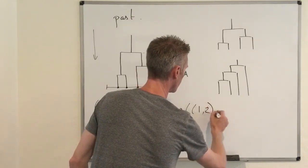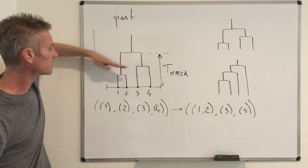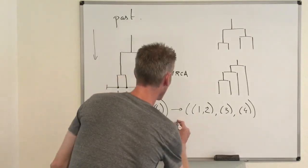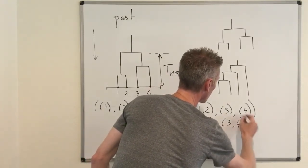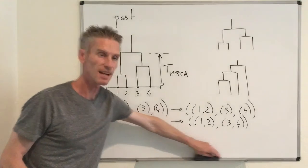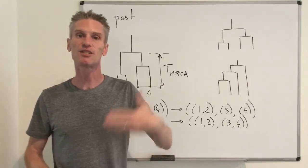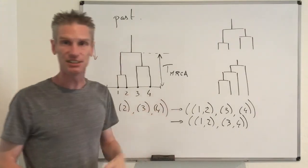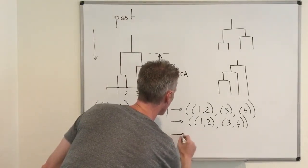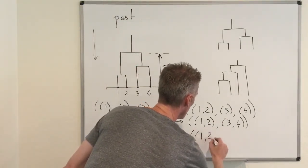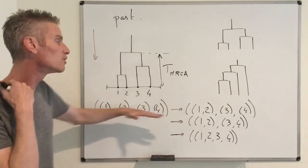Continuing, individuals 3 and 4 coalesce, giving partition {1,2}, {3,4}. Then in the last step everything merges to {1,2,3,4}. In general, starting with n individuals, after n−1 steps you have everything merged into one set. This sequence of partitions describes the topology of the genealogical tree.